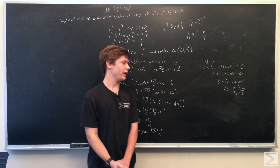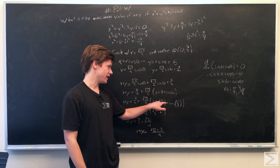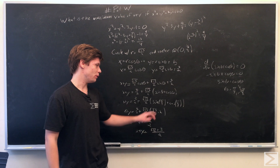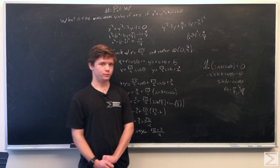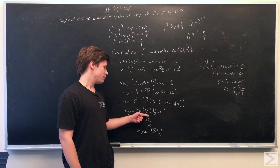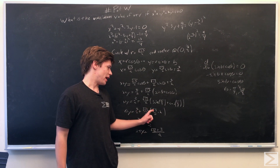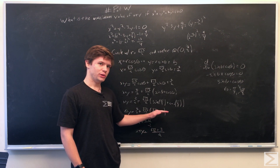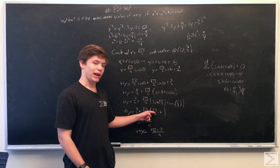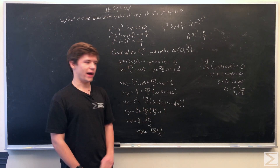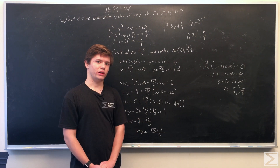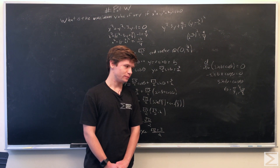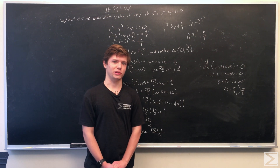Plugging in theta equal to pi over 4, both sine and cosine equal radical 2 over 2. So we have 3 halves plus radical 13 over 2 times radical 2 over 2 times 2, which simplifies to radical 2. Multiplying radical 2 by radical 13, we find x plus y equals 3 halves plus radical 26 over 2, which simplifies to (radical 26 plus 3) over 2. That is the maximum value of x plus y given the parameters.